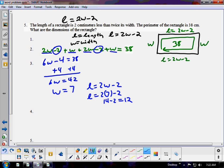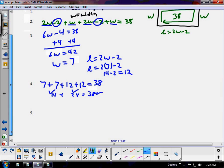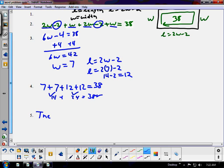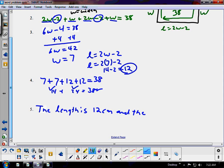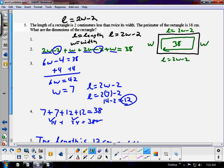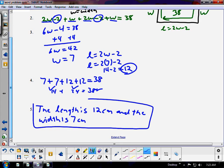So, the check, let's see if it checks, is 7 plus 7 plus 12 plus 12 equal to 38. 24 and 14 is 38, and that checks out. So, the question says, what are the dimensions? And dimensions are the length and the width. The length is 12 centimeters. And the width is 7 centimeters.